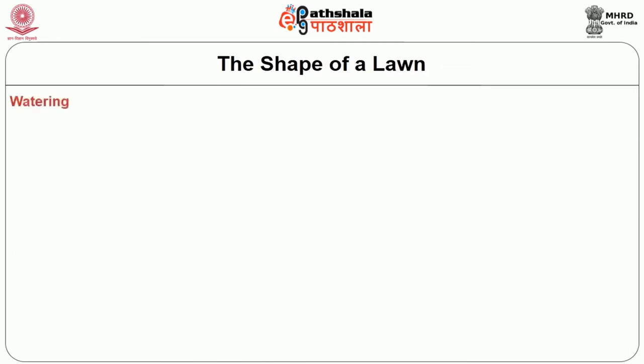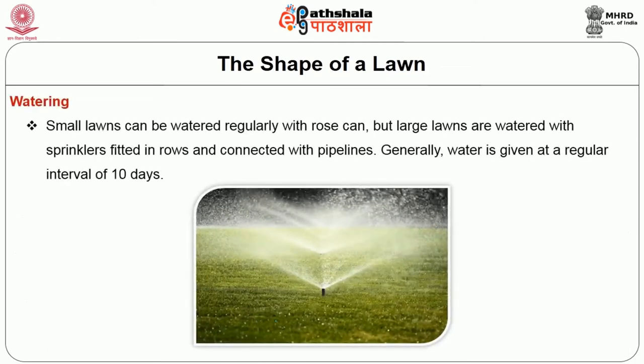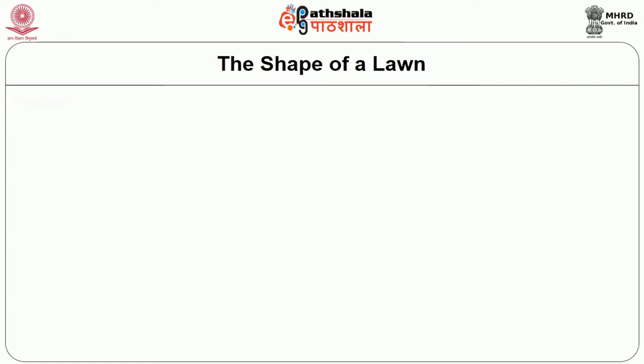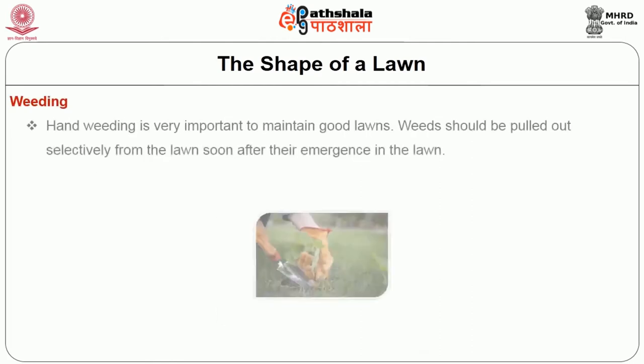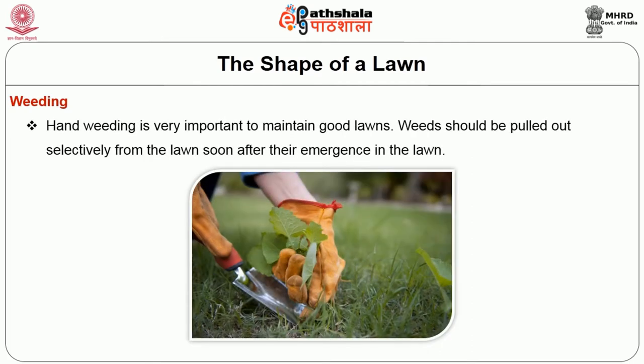The next step is watering. Small lawns can be watered regularly with a rose can. Large lawns are watered with sprinklers, fitted in rows and connected with pipelines. Generally, water is given at a regular interval of 10 days. Then weeding. Hand weeding is very important to maintain good lawns. Weeds should be pulled out selectively from the lawn soon after their emergence.